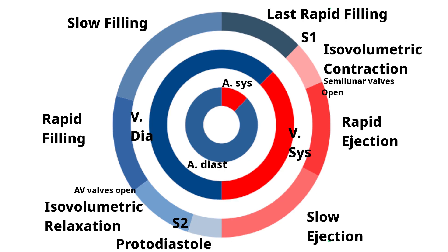The cardiac cycle can be divided into systole and diastole. The systolic phase lasts for 0.3 seconds and the diastolic phase lasts for 0.5 seconds. During diastole, blood is collected into the ventricles, and during systole, that collected blood is sent into the circulation. The atrial systole lasts for 0.1 second and the atrial diastole lasts for 0.7 second. The ventricular systole lasts for 0.3 second and the ventricular diastole lasts for 0.5 second.